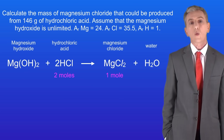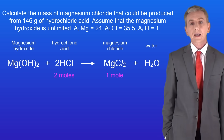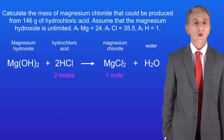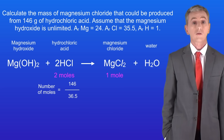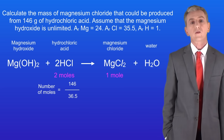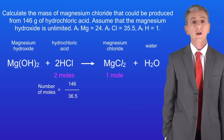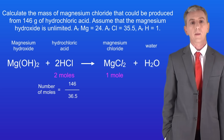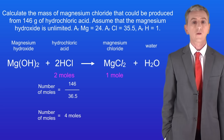We know that we've got 146 grams of hydrochloric acid and we need to calculate the number of moles. The number of moles is the mass divided by the relative formula mass. We have 146 grams and the relative formula mass for hydrochloric acid is 36.5. Remember that large numbers are never used to calculate relative formula mass. Putting these into the equation tells us that we have 4 moles of hydrochloric acid.